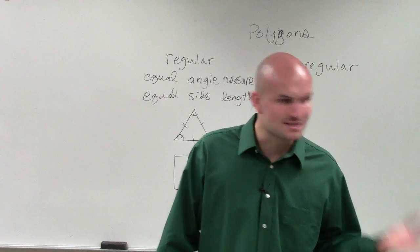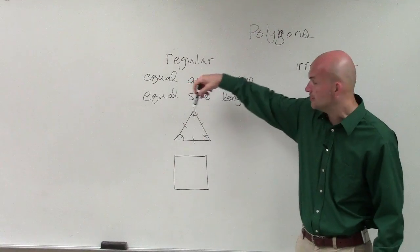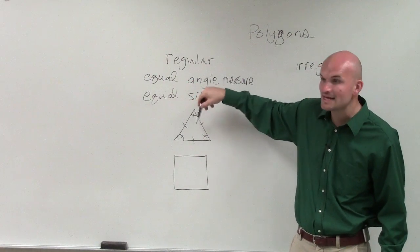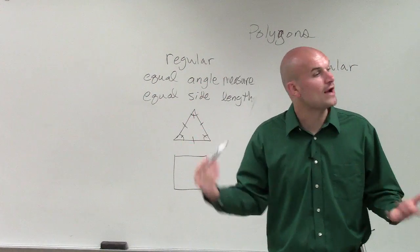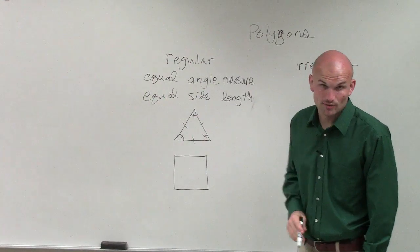You could have isosceles, you could have scalene. You can have all these different types of triangles. However, when you have a triangle that has the same side lengths and same angle measurements, we call that a regular triangle as well, or at least a regular polygon in its form.